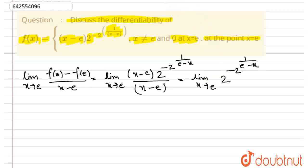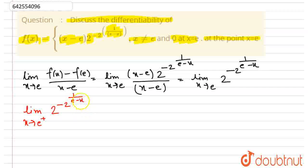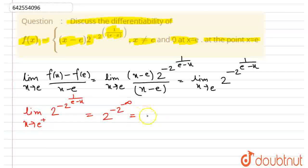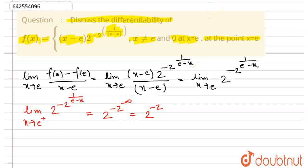Now for calculating this limit, we need to look at the individual right-hand and left-hand limits. The right-hand limit as x goes to e from the right of 2 to the power of minus 2 to the power of 1 upon (e minus x): as x goes to e from the right, 1 upon (e minus x) goes to minus infinity. So that equals 2 to the power of minus 2 to the power of minus infinity. Since 2 to the power of minus infinity equals 0, we get 2 to the power of 0, which equals 1. That is the right-hand limit.